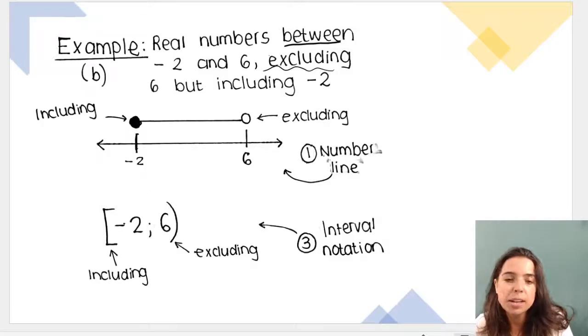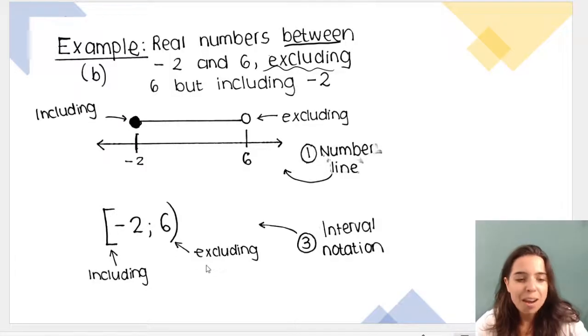And then, when we represent it like this with our brackets, negative 2 is including, so we use our square brackets. And 6 is excluding, so we use our round brackets.